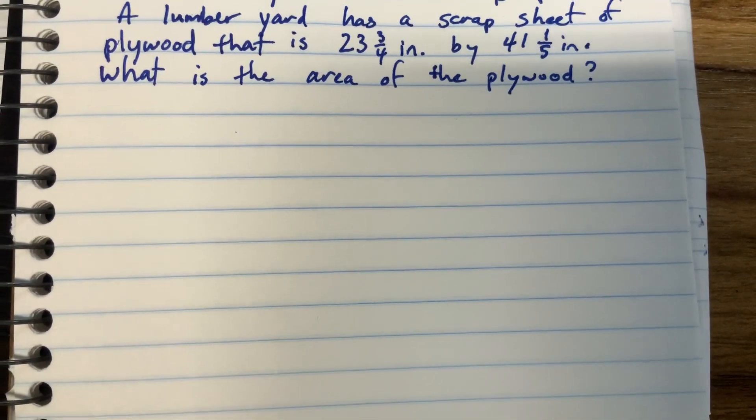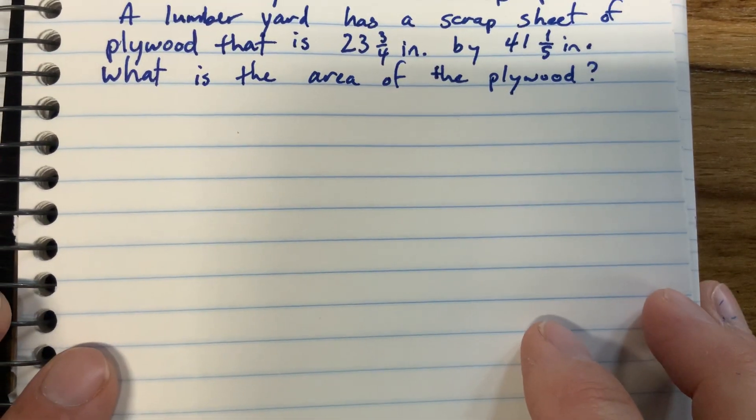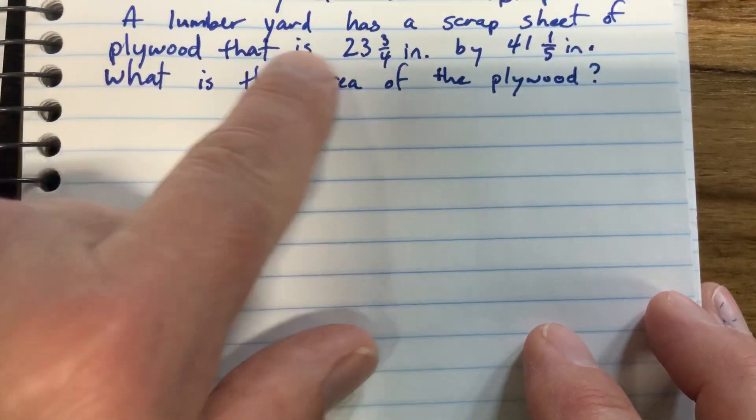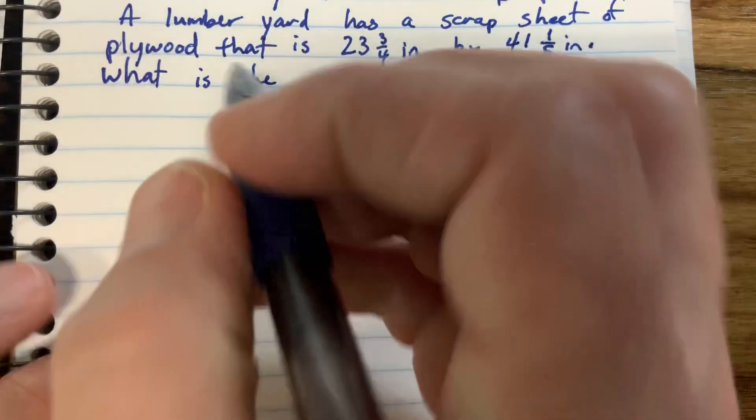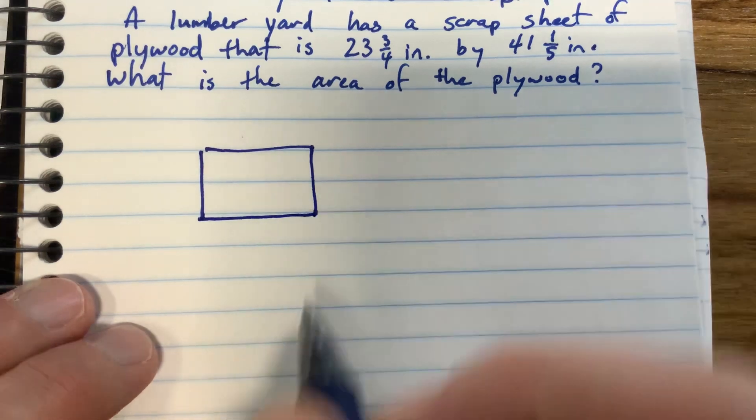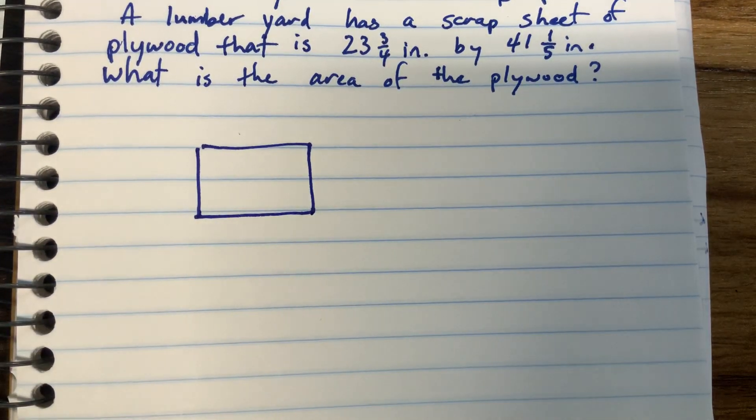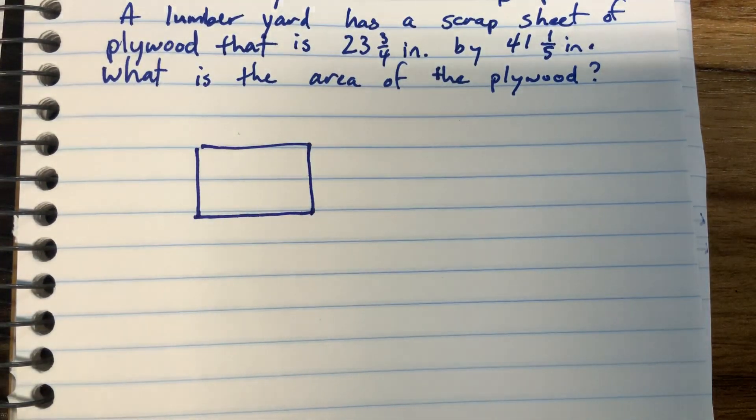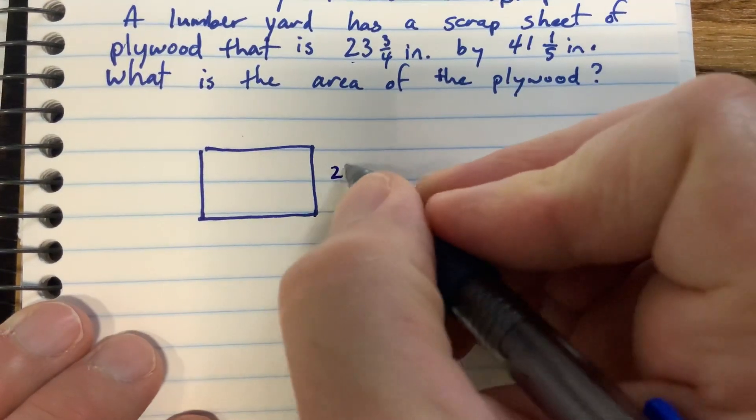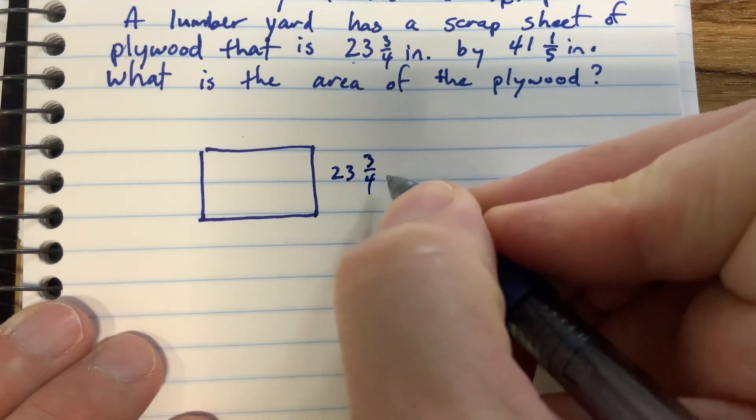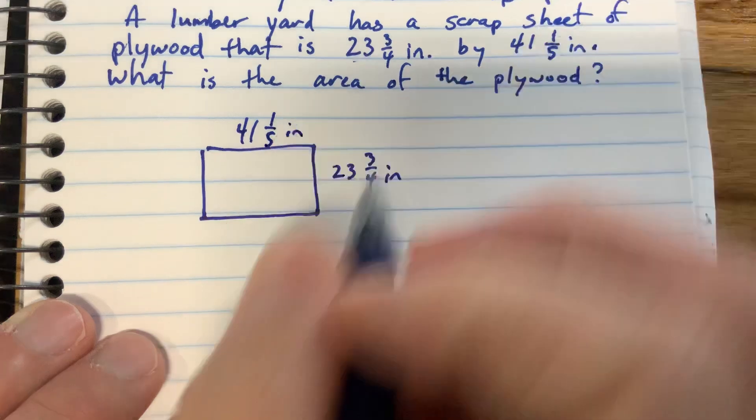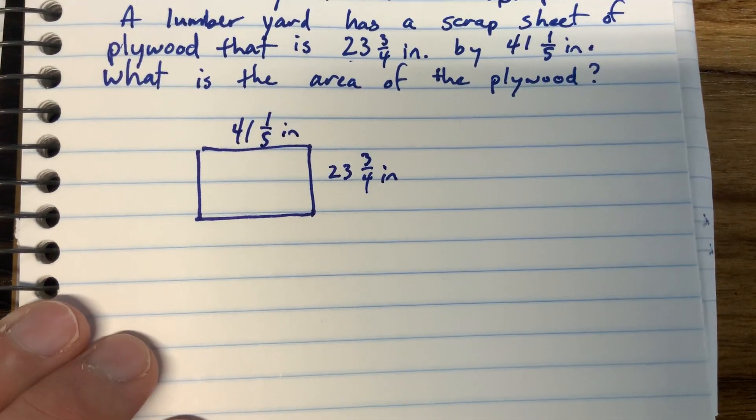So on our next one it says a lumber yard has a scrap sheet of plywood. At a lumber yard, like Home Depot, you can buy plywood. Plywood comes in rectangle sheets - it's not like a sheet on your bed, but just a board that's a rectangle. This sheet of plywood is 23 and three-fourths inches by 41 and one-fifth inches, and we're finding the area.